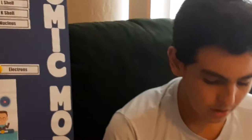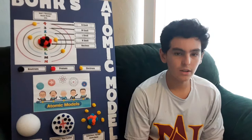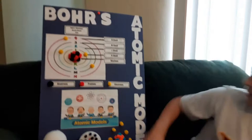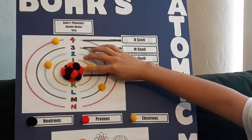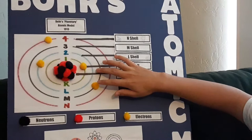The discoverers of this model are Niels Bohr and Ernest Rutherford. Here is the Rutherford-Bohr model — this is my version of Bohr's planetary atomic model. The red ones are protons, the black ones are neutrons, and the yellow ones orbiting around the nucleus are the electrons.